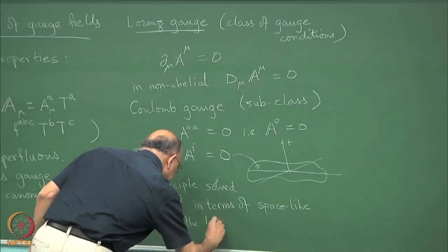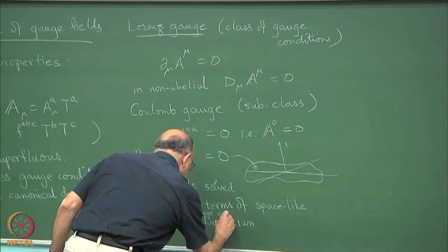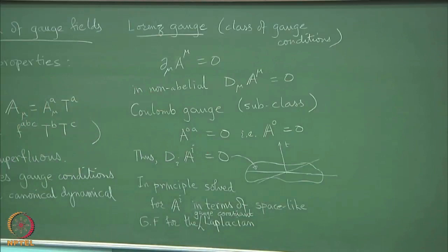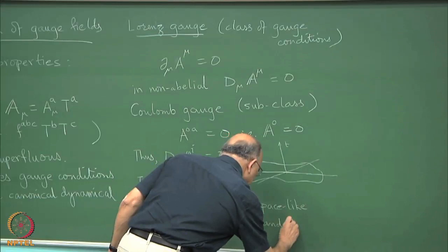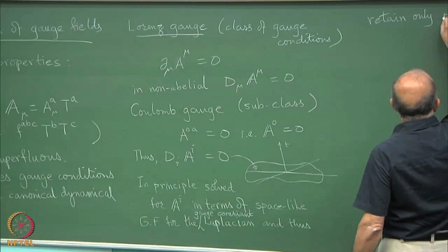Actually it is done also, I should not say, but I do not want to get into too much of the detail. The formalism can be solved for A_i in terms of space-like Green's function for the Laplacian. This is of course a covariant Laplacian, and thus retain only physical degrees of freedom.